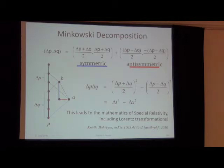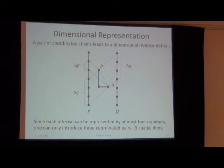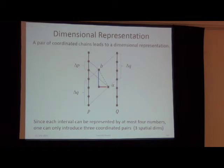On slide 50, you can introduce a dimensional representation where you use two chains to quantify an interval. These chains must be coordinated in the sense that they provide the same measures when used to quantify the same interval. With this consistency constraint, you can introduce the concept of dimensions to a partially ordered set. Since each interval can be represented by at most four numbers, one can introduce a maximum of three coordinated pairs, which gives you three spatial dimensions. It's quite interesting that three spatial — three anti-symmetric — dimensions emerge from this framework.